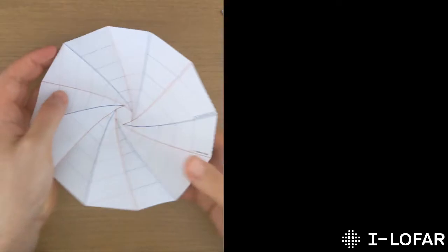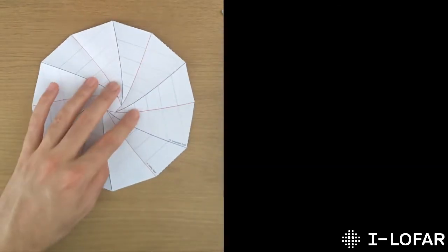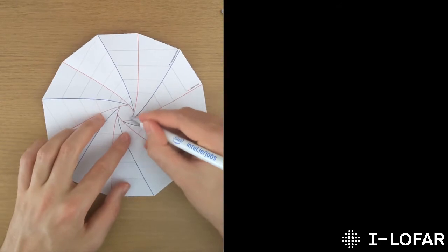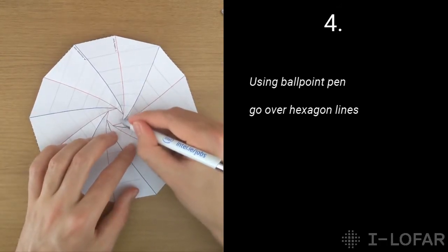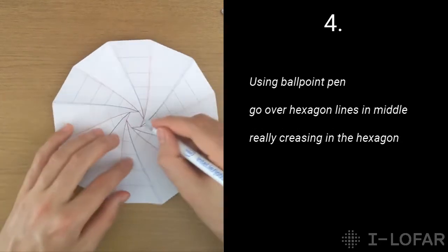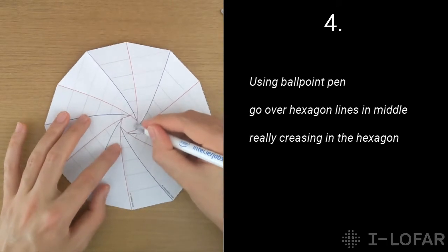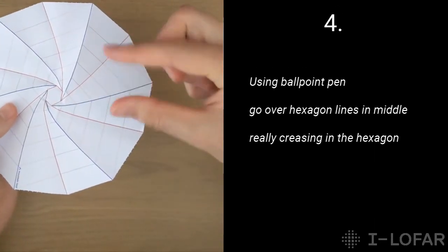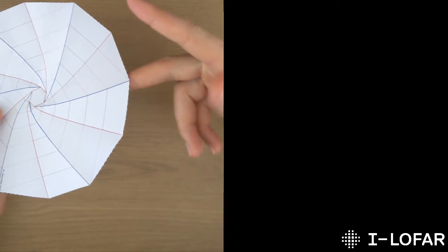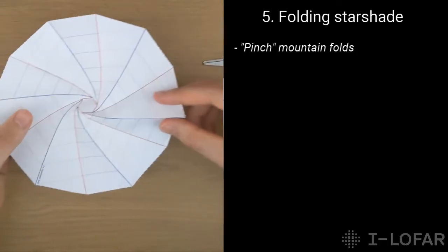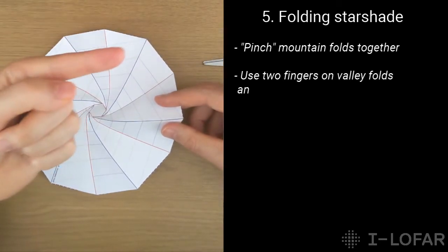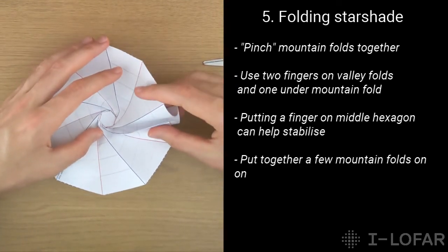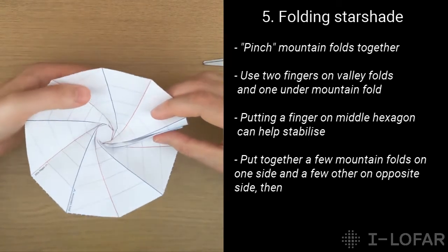Alright. When you're done doing all the folds, good job by the way, because it is quite a long job. You can now start to try and fold the actual starshade. So, first thing you want to do is re-emphasize the hexagon in the middle with the ballpoint pen. This will help you fold. So go along the lines, the hexagon in the middle, the orange lines, and really crease them in with the pen. Once you've done that, now you're going to try and fold the starshade on itself. So what you want to do is use two fingers on either valley folds on the side, and then one finger under into the mountain fold.